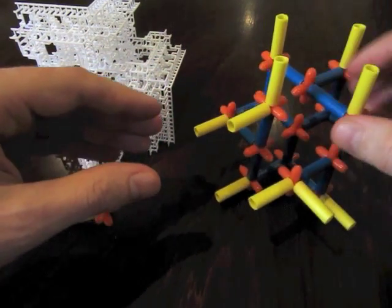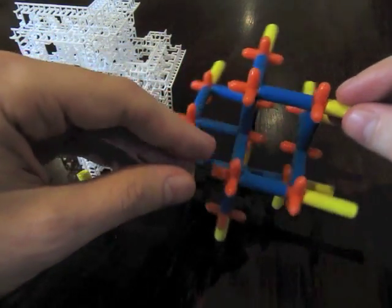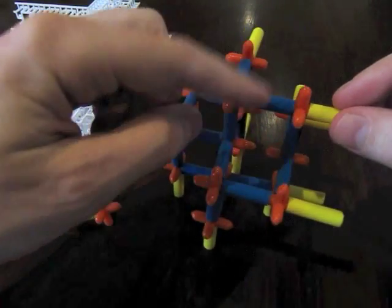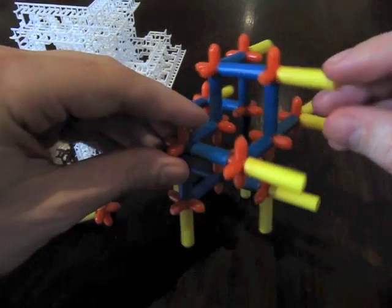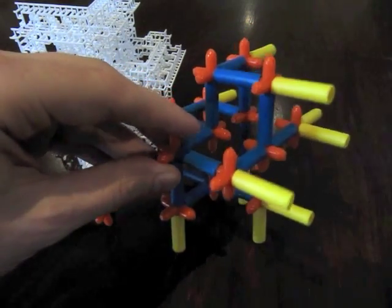And again, this is a degree 3 graph, so all the vertices are either these tripods or these T objects.